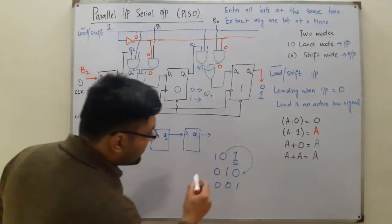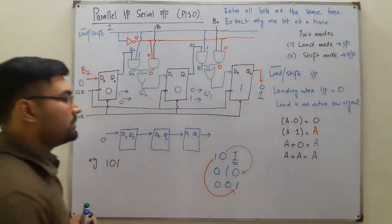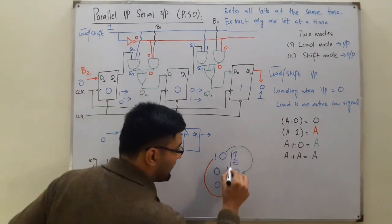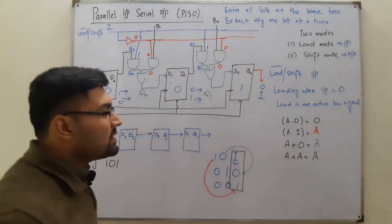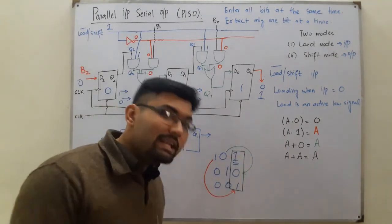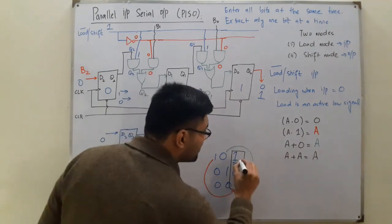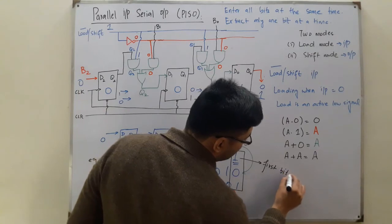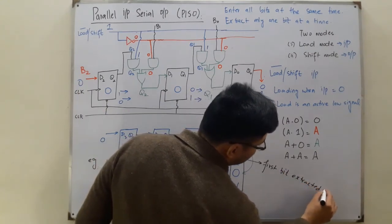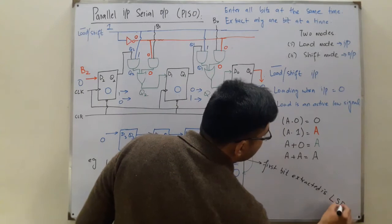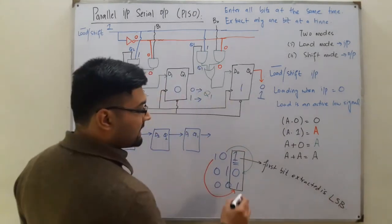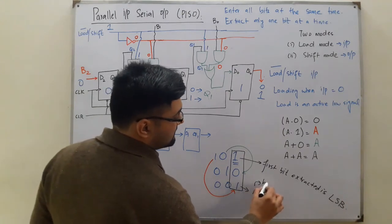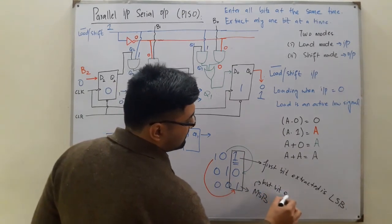So now we have extracted all bits. Keep in mind that in the serial output, the first bit extracted is the least significant bit, and the last bit extracted is the most significant bit.